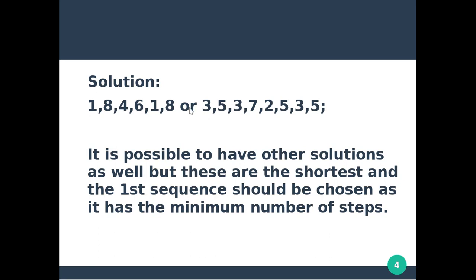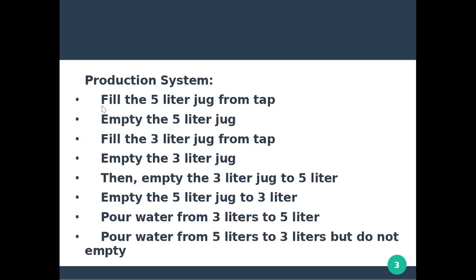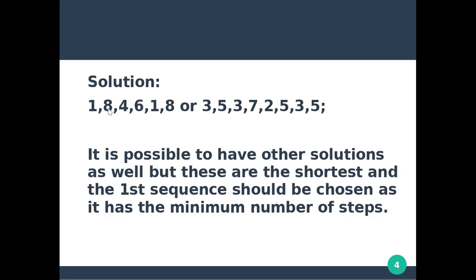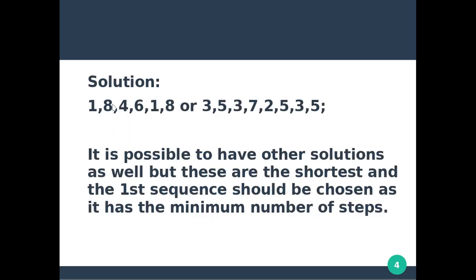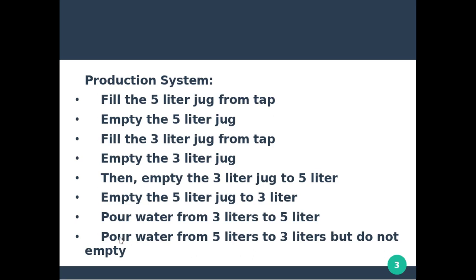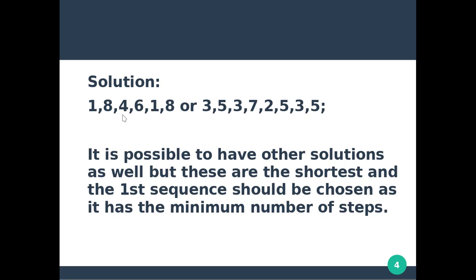In this production list, the steps are numbered 1 through 8, following the sequence 1, 8, 4, 6, 1, 8. The solution takes 6 steps. It is possible to have other solutions, but the shortest and fastest sequence should be chosen as it has the minimum number of steps.